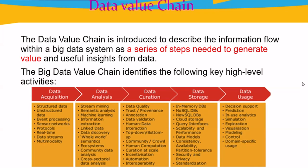The data value chain is introduced to describe how information flows in a big data system, as a series of steps needed to generate value and useful insight from data. There are about five steps: data acquisition, data analysis, data curation, data storage, and data usage.